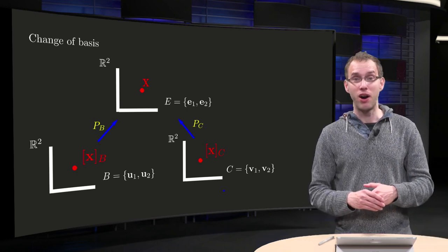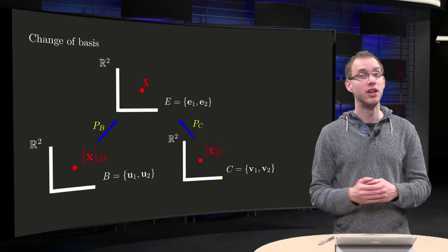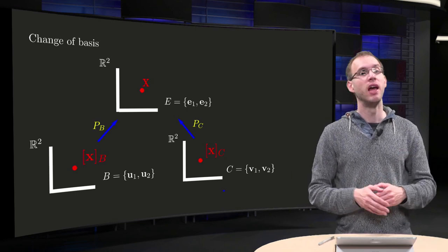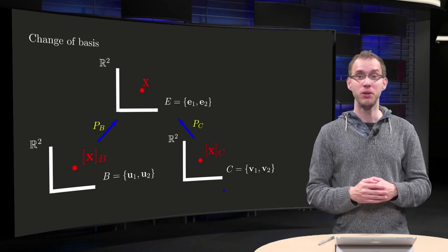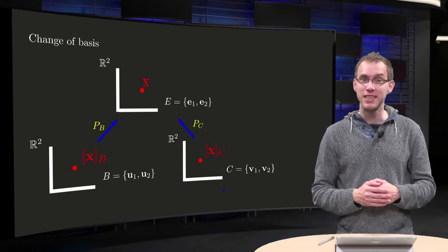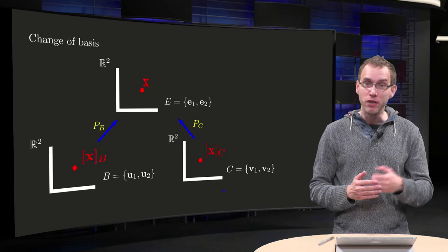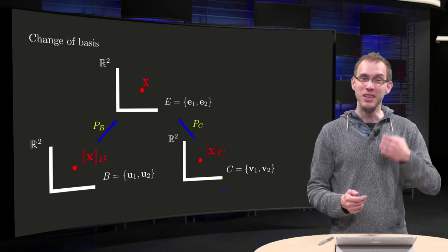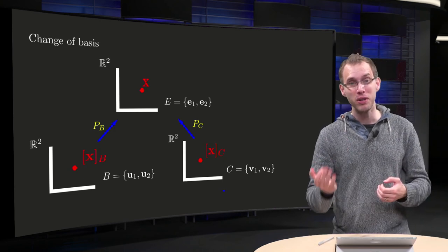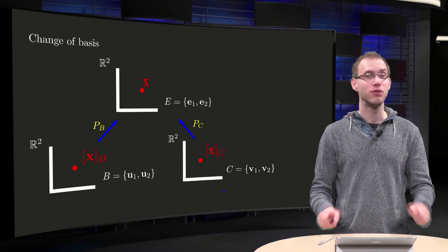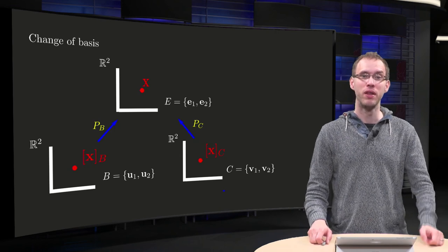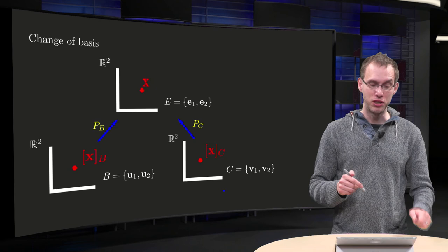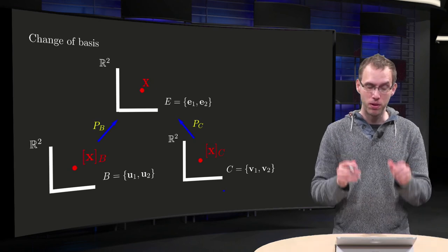If you have a basis b for R^n and a vector x, you know how to compute x in the basis b, written x_b. If you have another basis c, you can compute similarly x_c. But what if you start with x_b and want to compute x_c? Do you need to compute x first, or can it be done directly? That's what you will learn in this video. We'll do it in R2 just to keep the notation a bit simpler.